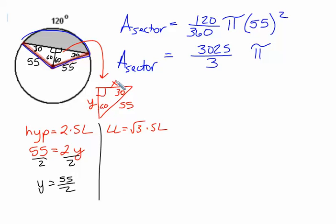And we have longer leg is equal to radical 3 times shorter leg. Plug things in. The longer leg is across from the 60. Don't go by how the picture looks. That's x. The shorter leg we just found was 55 over 2. So we get that x is 55, radical 3, all over 2.